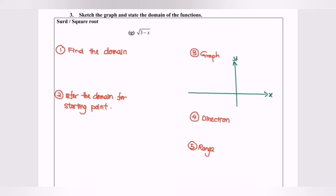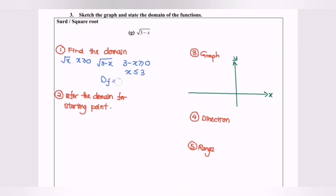Step number one, we're going to determine the domain. As we know, for square root of x, x must be greater than or equal to 0. So for square root of 3 minus x, the domain condition is 3 minus x greater than or equal to 0, which gives us x less than or equal to 3. So the domain will be negative infinity until 3.